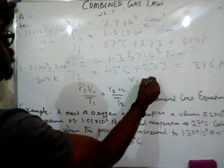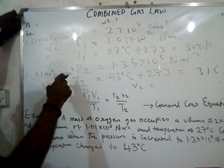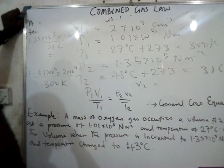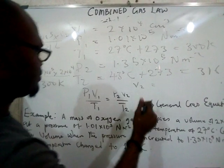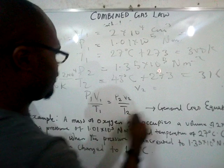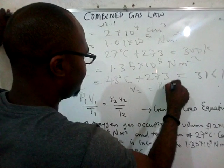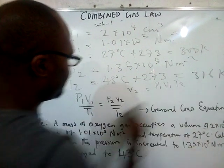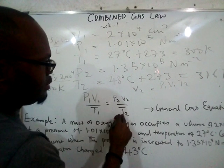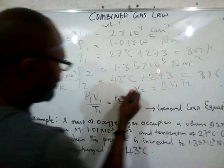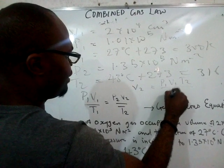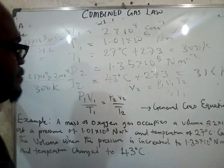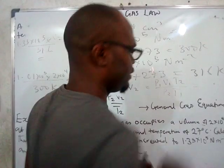To make V2 the subject, you cross multiply. You get P1V1T2 all over P2T1. Everything on the left — P1, V1, T2 — goes on top, and everything associated with V2 — P2 and T1 — goes on the bottom. So V2 = P1V1T2 / (P2T1).